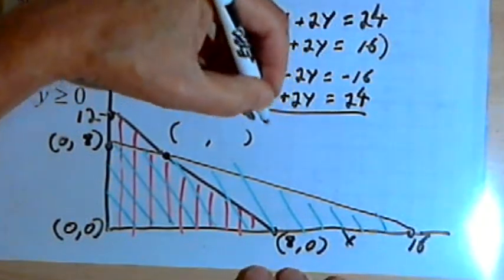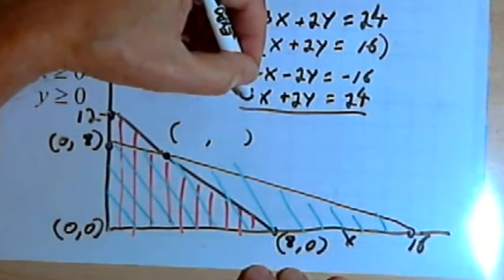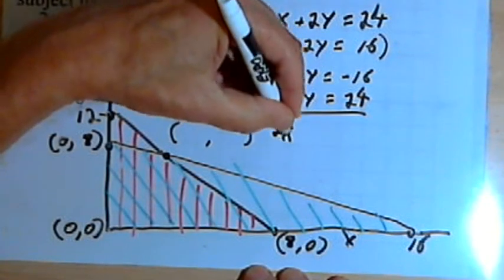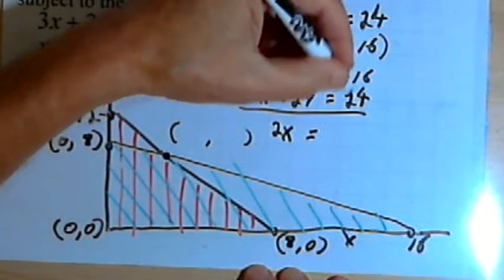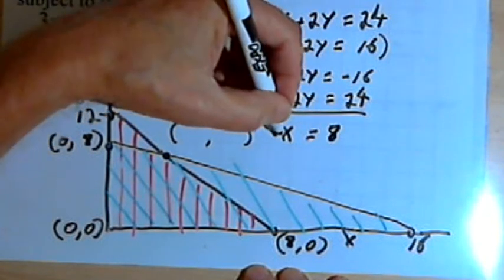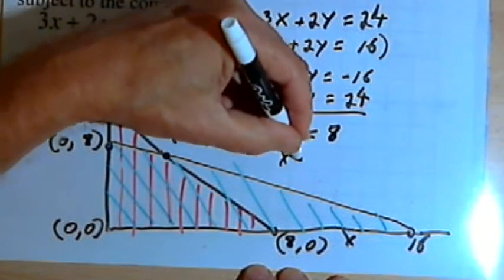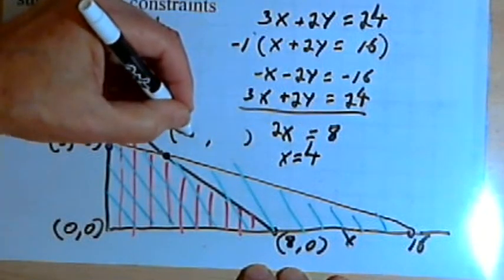When I add them, I get negative x plus 3x is 2x. The negative 2y and positive 2y cancel. Negative 16 plus 24 is 8. So I've got 2x equals 8, which means x equals 4. Let's put that 4 in.